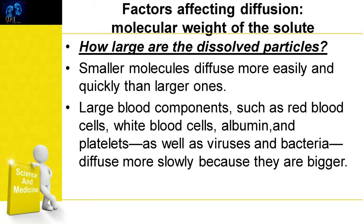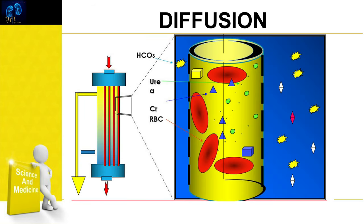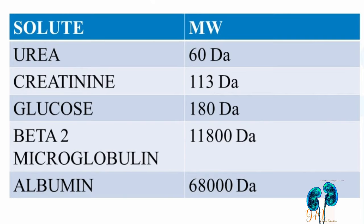The next factor is molecular weight of the solute. Smaller molecules diffuse more easily and quickly than larger ones. Larger blood components such as red blood cells, white blood cells, albumin, and platelets, as well as viruses and bacteria, diffuse more slowly or not at all because of their bigger size. Small molecules such as urea and salt diffuse faster, but middle molecules may pass through more slowly.